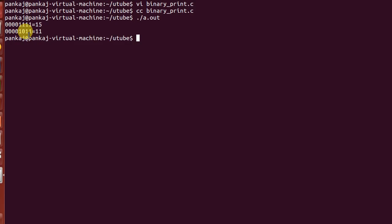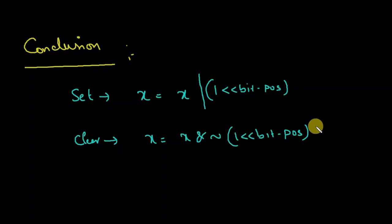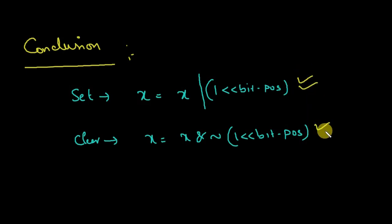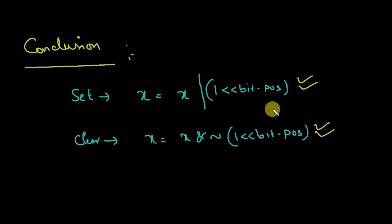In conclusion: to set a bit, use number = number | (1 << bit_position). To clear a bit, use number = number & ~(1 << bit_position). Don't just memorize these formulas — understand the concept behind them, because that's what truly matters.